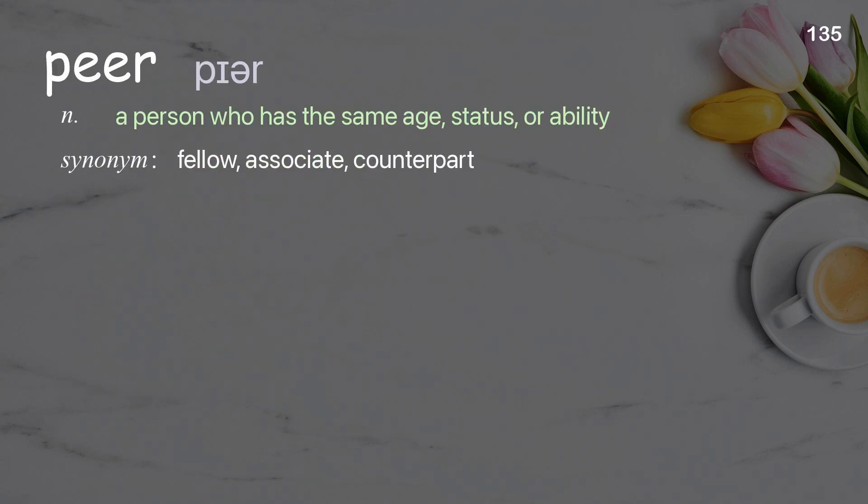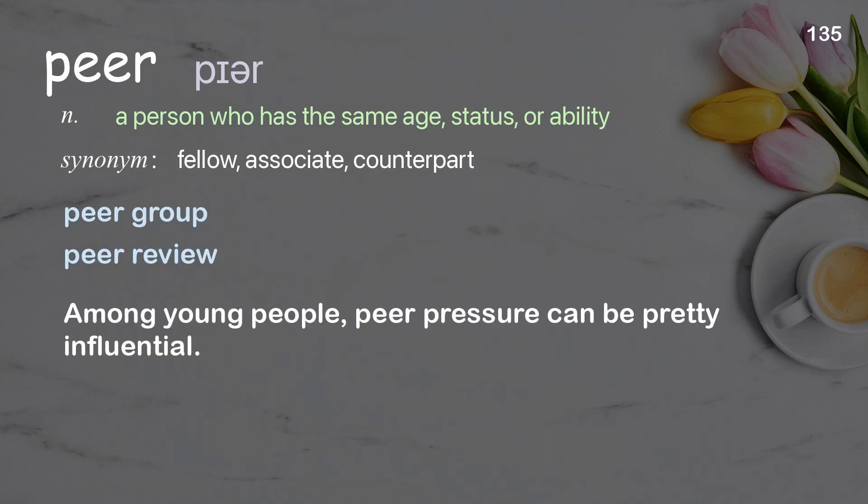Peer: a person who has the same age, status, or ability. Examples: peer group, peer review. Among young people, peer pressure can be pretty influential.